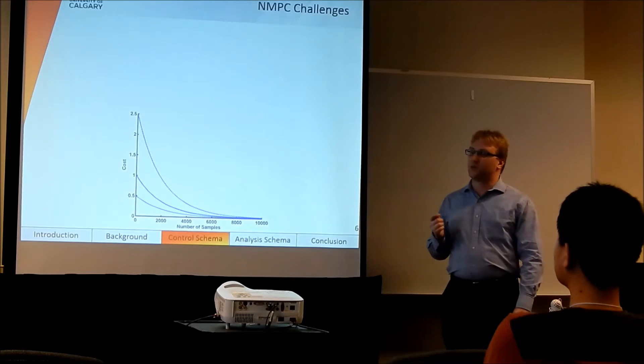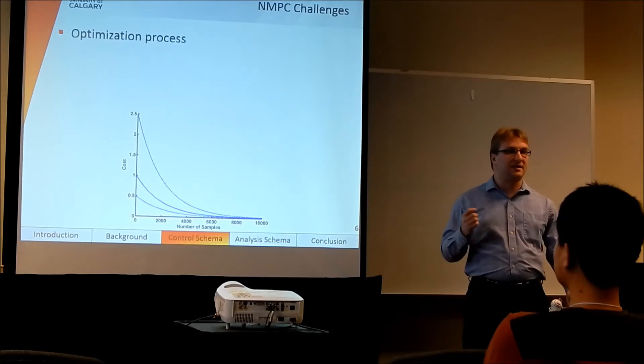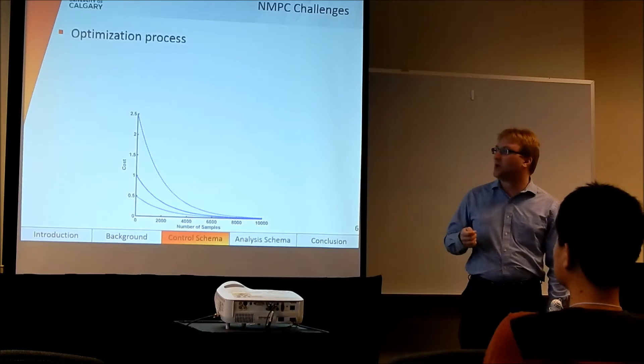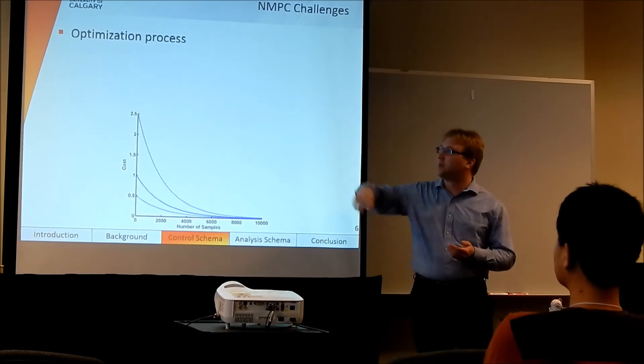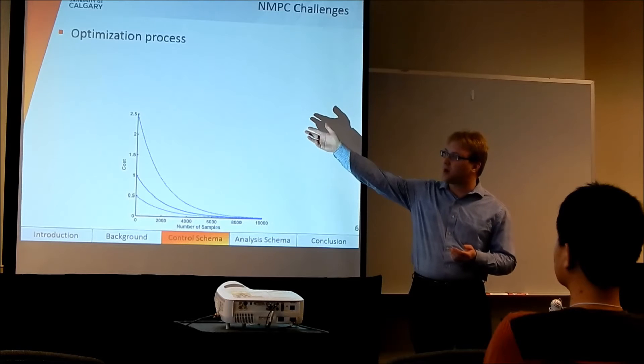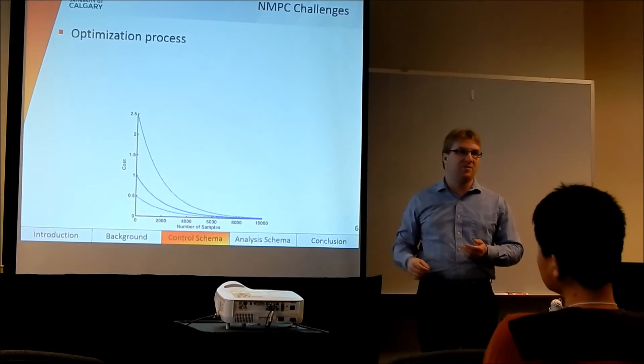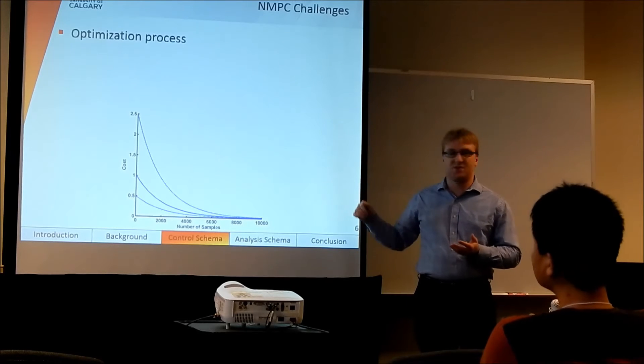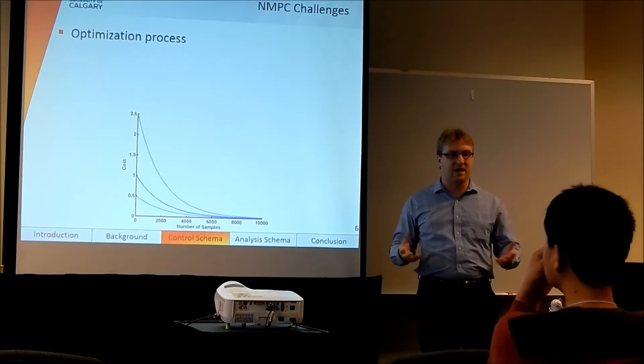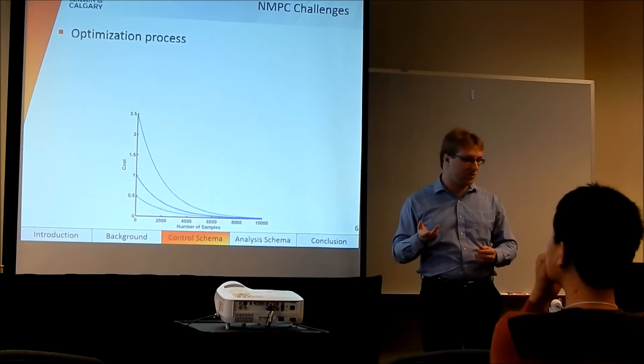Now there are a couple of problems with nonlinear model predictive control. The first of those arises from the fact that it is an optimization process. So when we are guessing and testing, we don't know how good our initial guesses will be. They might be as high as a cost of 2.5, they might start as low as a cost of 0.5 in this particular example, and maybe the median value would be 1. But as we take more samples, say 1,000, 10,000, 100,000, these costs all converge to a single point and we get the optimum solution.